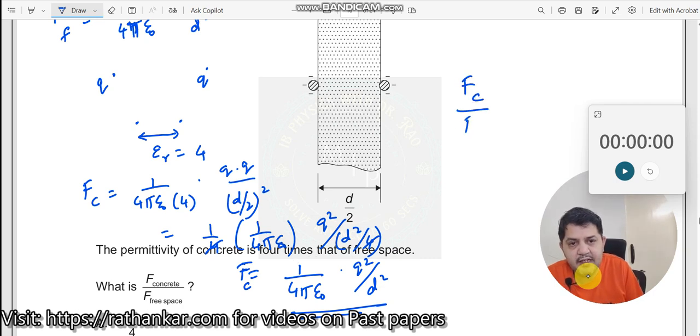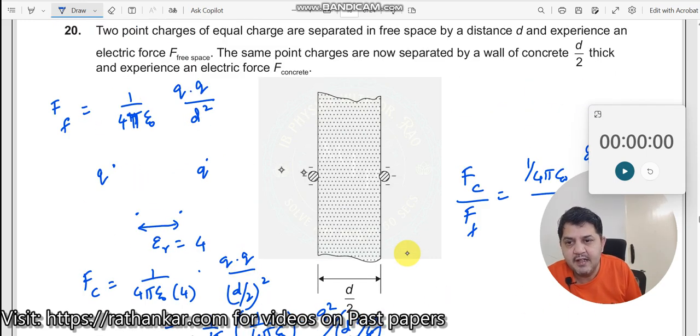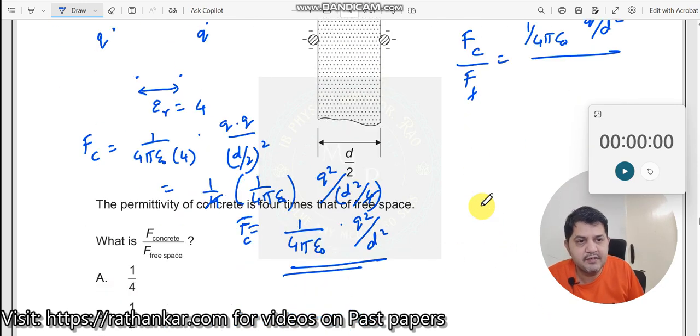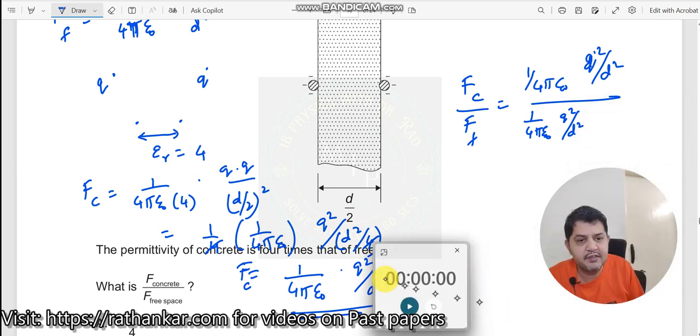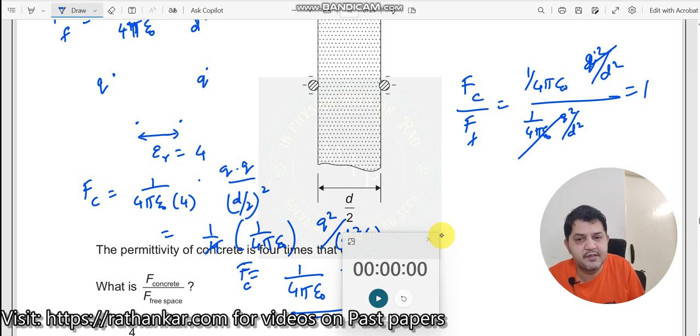F concrete divided by F free space. Let me divide one by the other. I will get this as 1 by 4 pi epsilon naught into Q square by d square divided by what did I get for F free space? I got the same thing 1 by 4 pi epsilon naught into Q square by d square. So let me substitute that also over here. I get this as 1 by 4 pi epsilon naught into Q square by d square. So when I do this, these two cancels, you get the answer one.